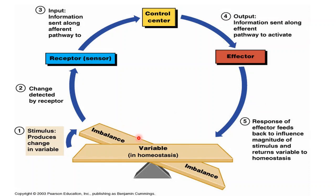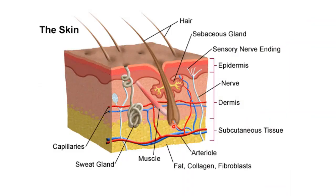Homeostasis is maintained by a mechanism called negative feedback. When a variable is constant, any imbalance is detected by sensors called receptors. These receptors send an afferent message to the control center, usually in the brain. The control center responds by sending an efferent message to the effector organs in order to restabilize and oppose the change, bringing it back to stable. That's negative feedback.